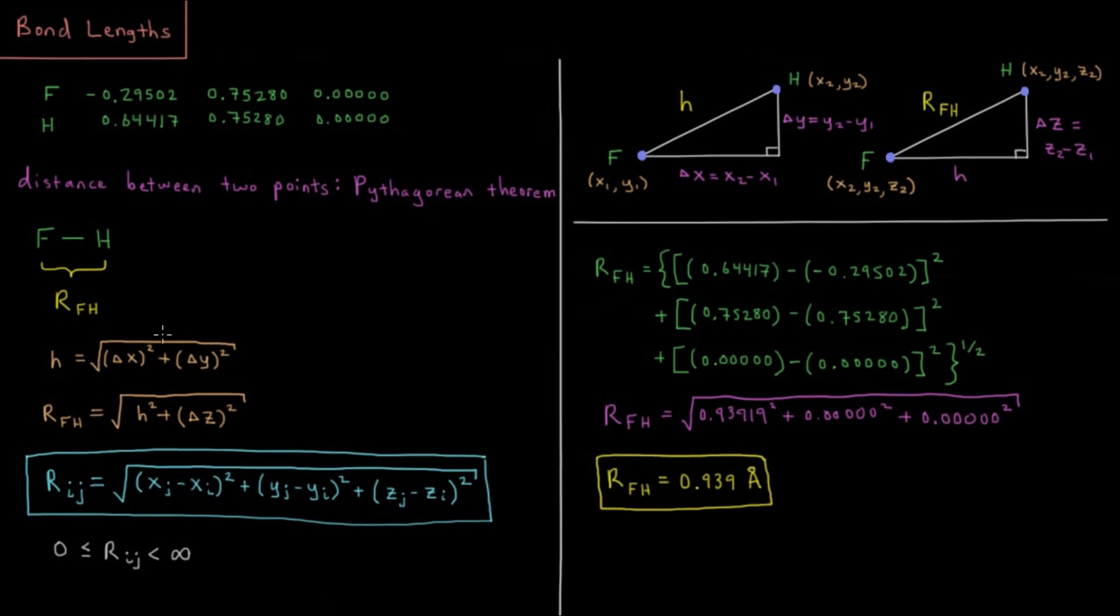First we're going to compute in two dimensions using Pythagorean theorem. We have the difference between them in X. This is atom two, this is atom one. X2 minus X1 is their difference in the X direction, delta X. Y2 minus Y1 is their difference in the Y direction, delta Y.